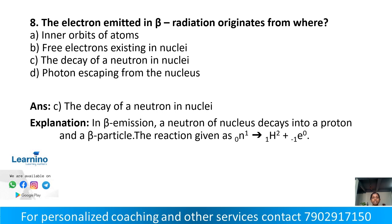The electron emitted in beta radiation originates from where? Option A: inner orbit of atoms. Option B: free electrons existing in nuclei. Option C: decay of a neutron in nuclei. Option D: photon escaping from the nucleus. In beta emission, a neutron in the nucleus decays into a proton and an electron. The correct answer is Option C: decay of a neutron in nuclei.